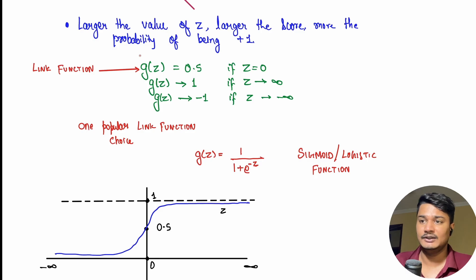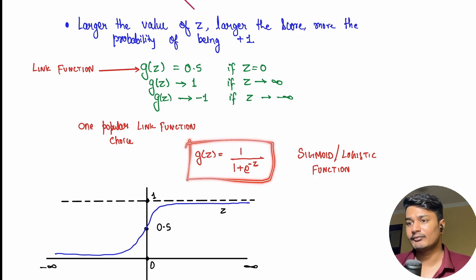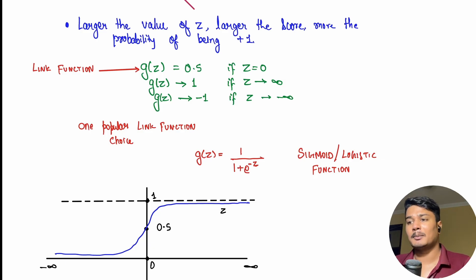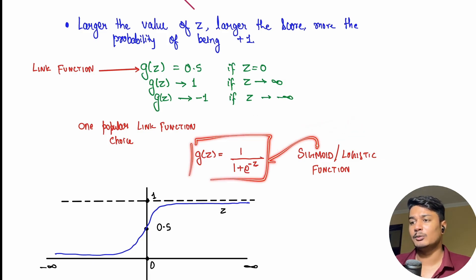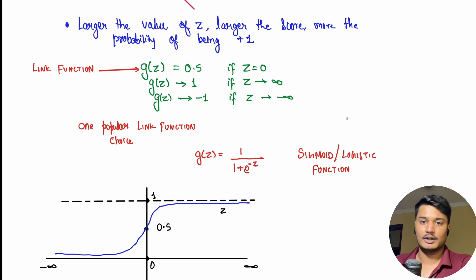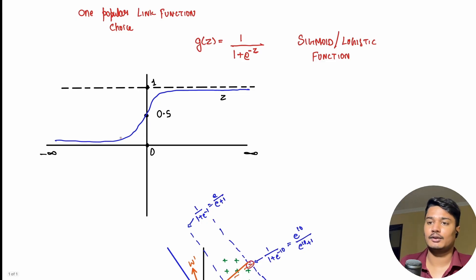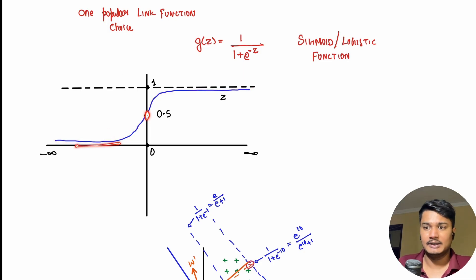This g is known as a link function, and one of the most popular choices for the link function is g(z) = 1 / (1 + e^{-z}). Since z = w^T x, this becomes 1 / (1 + e^{-w^T x}). This function is known as the sigmoid function or logistic function. It looks like an S-curve: at z = 0 it is 0.5, going towards -infinity it approaches 0, and towards +infinity it approaches 1.